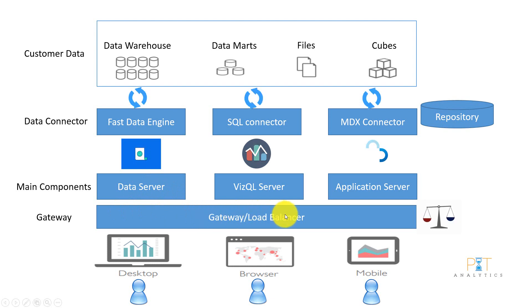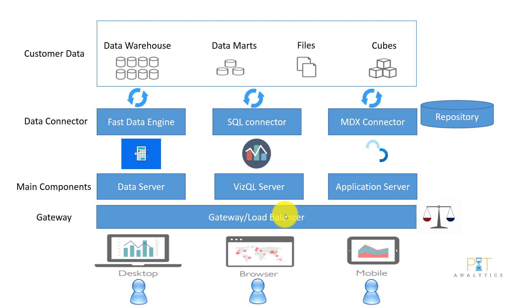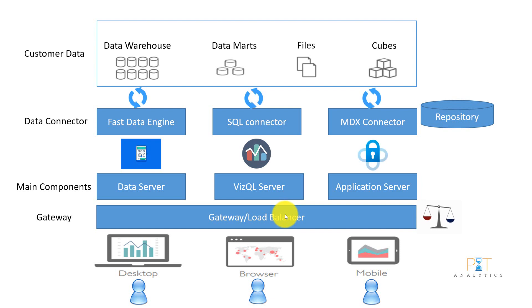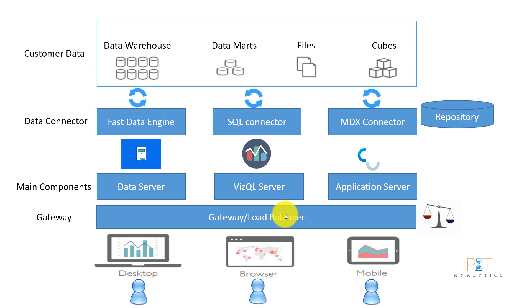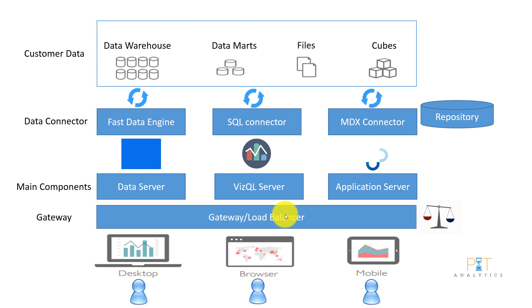There is a Gateway and Load Balancer. If there are multiple requests coming for the Data Server, VizQL Server, or Application Server, the gateway or load balancer intercepts these requests and passes them to the servers one by one or in chunks. This way, if there are more requests available, it passes them in chunks so it does not impact the performance of the server. Based on the bandwidth, a certain number of requests go to the different servers, and the load balancer helps improve performance and balance the server load.